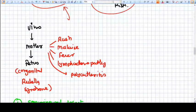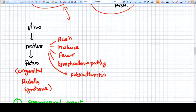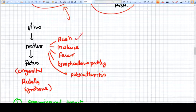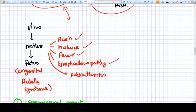Now, what are the symptoms of this rubella syndrome? The virus goes first to the mother and then the fetus. In the mother, the virus has following symptoms like rash, malaise, fever, lymphadenopathy, polyarthritis.